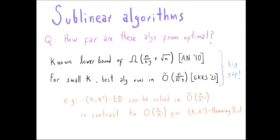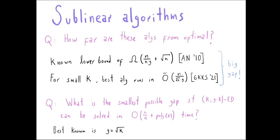This gap led us to wonder: what is the smallest possible gap such that we can solve the gap problem in time n/k + polynomial in k? The best that was known achieves a gap of √k. Our paper improves on this.